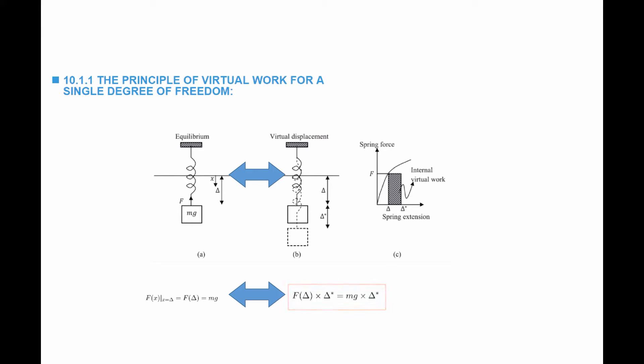You can see that either equation — they're both equivalent. The force in the spring multiplied by delta star is called the internal virtual work. mg multiplied by delta star is called the external virtual work. So the equation states that from equilibrium, internal virtual work is equal to external virtual work, and this equation is equivalent to the equation of equilibrium.